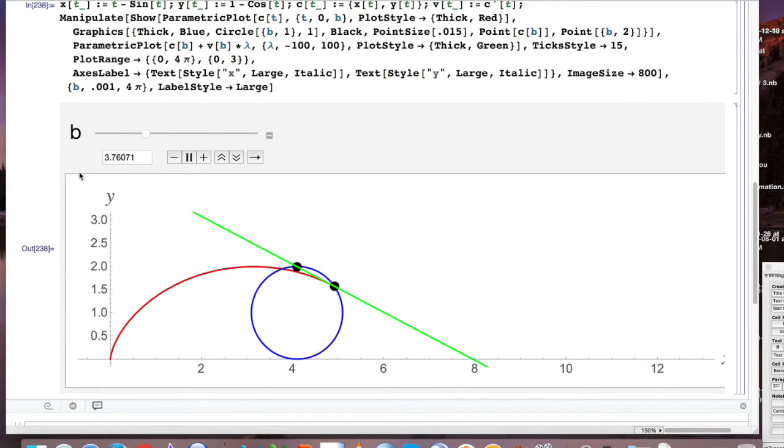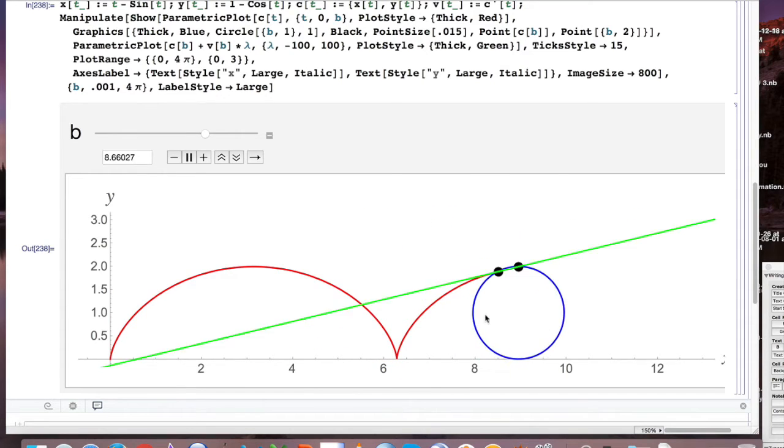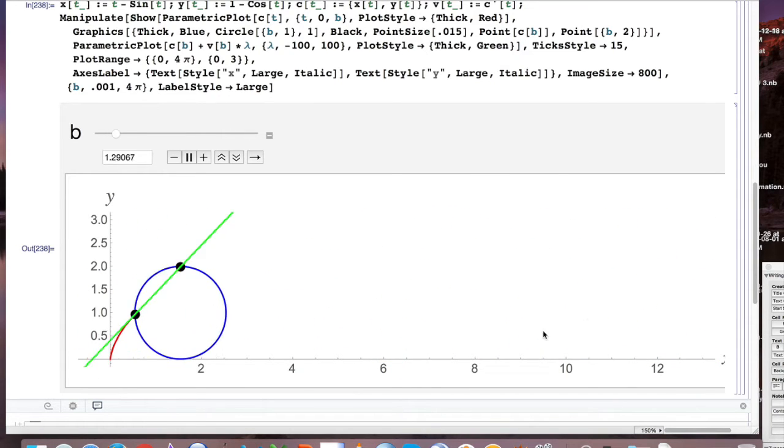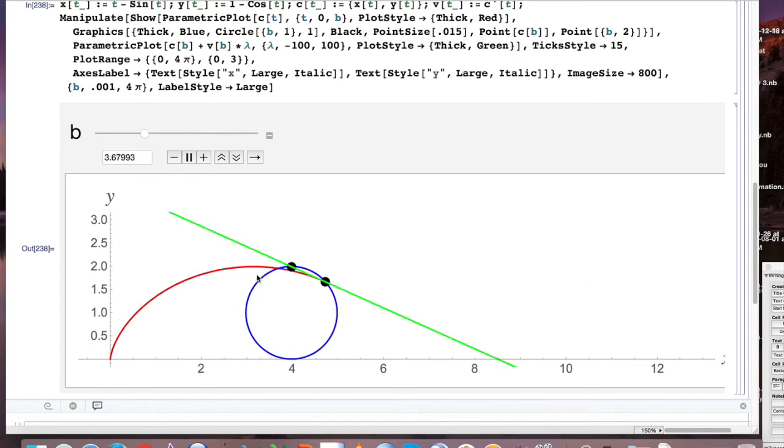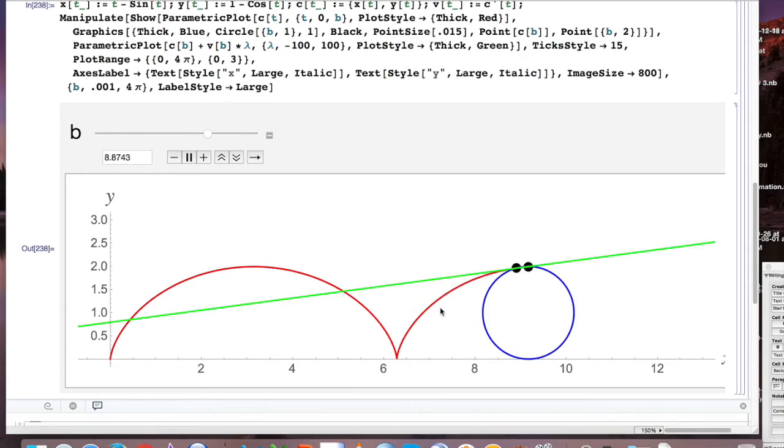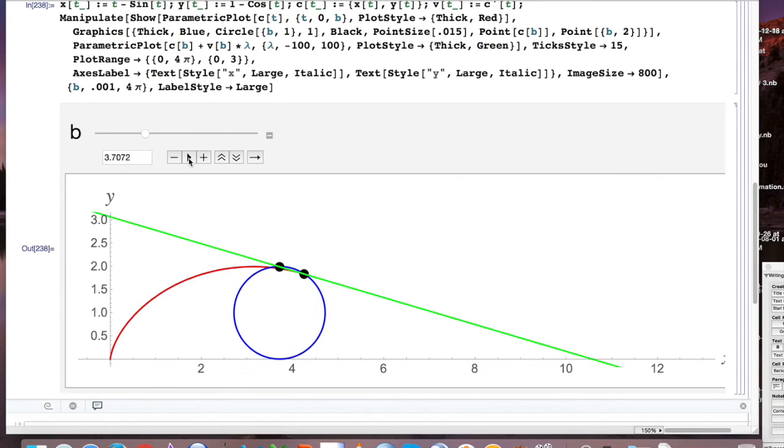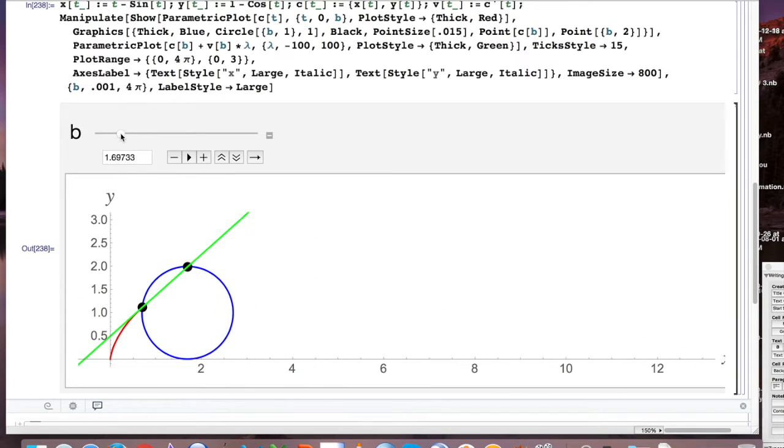And this code here generates the animation of a rolling cycloid. I put the tangent line and the cycloid itself in this animation as well. So you can see the black dot that moves around the circle is the point P. You can see we've got a black dot at the top of the circle. You can see you've got the cycloid in red. That's the path of the black dot through space.